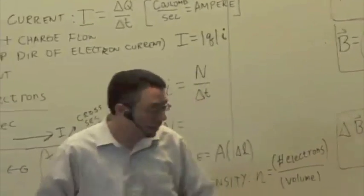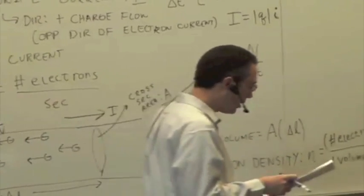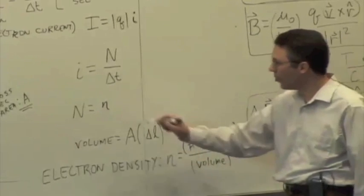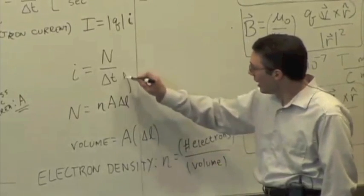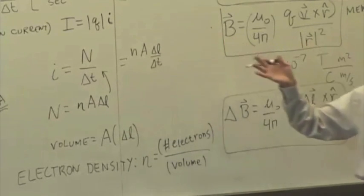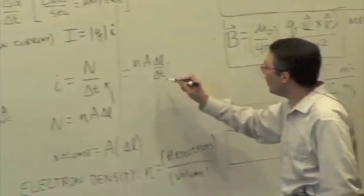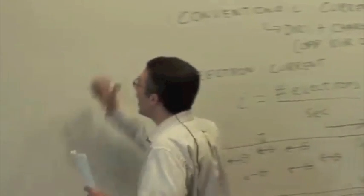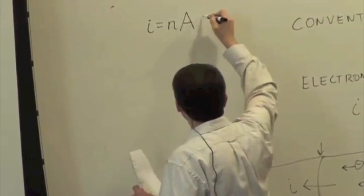The bigger the number of electrons per unit volume, the more conductive the material will be. If I know little n and the volume, the total number of electrons is n times A times delta L. Plugging that in, the electron current little i equals n times A times delta L over delta t, and delta L over delta t is just the drift speed. So the electron current equals the electron density n times the area A times the drift speed v.